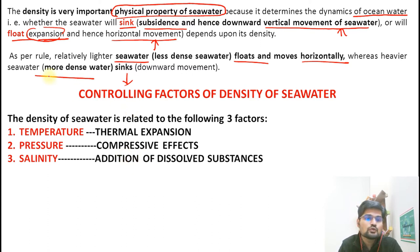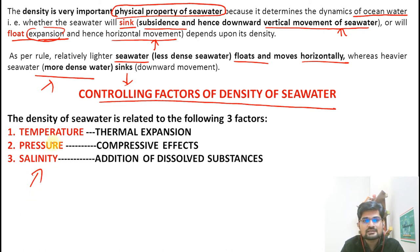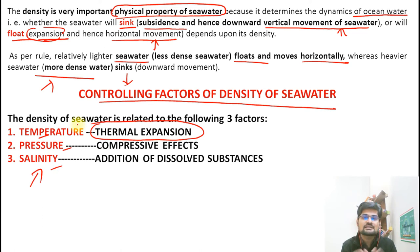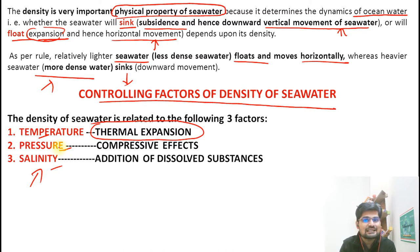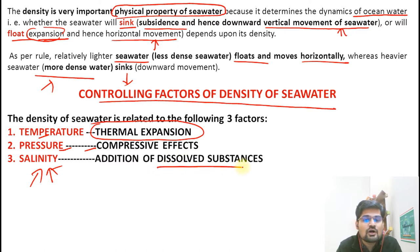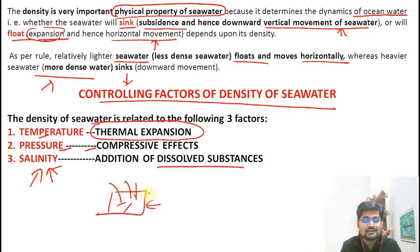The controlling factors of density are three: temperature, pressure, and salinity. Temperature involves thermal expansion and contraction — if cool, it contracts; if hot, it expands. Pressure compresses or releases water — more pressure compresses molecules together, increasing density. Salinity means addition of dissolved salt: more salt means more dense, more heavy, it sits down.